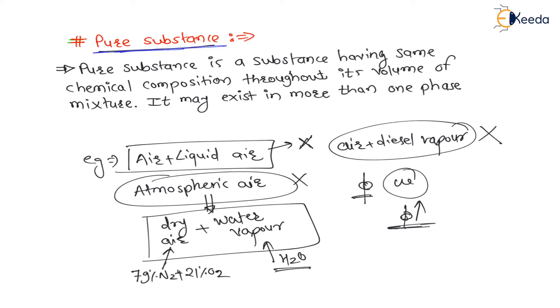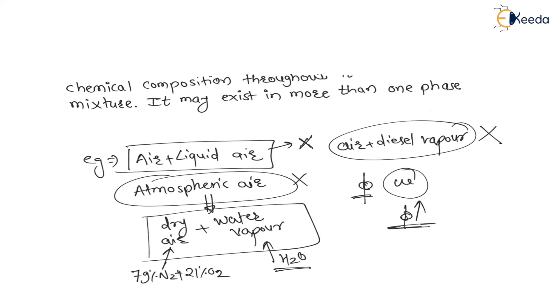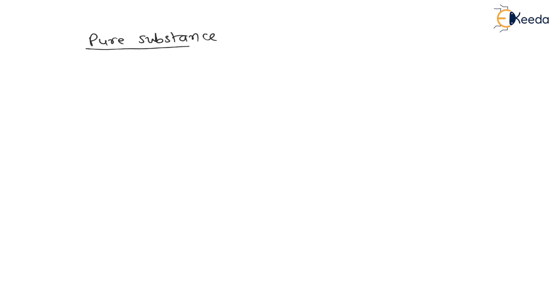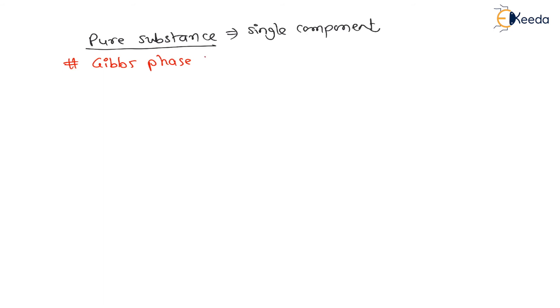Whenever a substance is a pure substance, it is considered as a single component. Water at its triple point — ice plus water plus water vapor — is a pure substance and therefore a single component. Now we will understand the Gibbs phase rule, and there are many chances for exam questions on this topic.